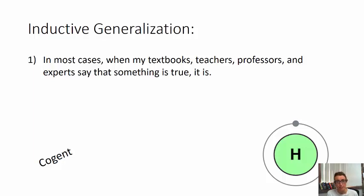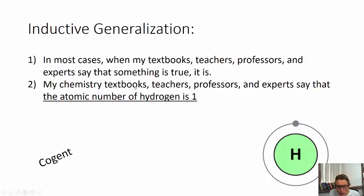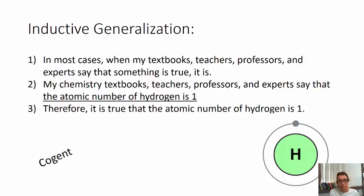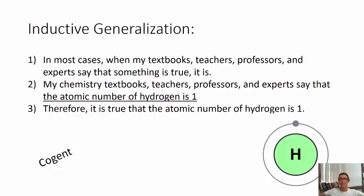You're in biology class, you read something in your textbook — it's probably true because it's in your textbook and your teachers assigned it. This is a generalization: experts know what they're talking about. So when chemistry textbooks, teachers, professors, and experts say that the atomic number of hydrogen is one, you should probably trust them. You don't have to go get an electron microscope and check it yourself. It could turn out there's some vast conspiracy about the periodic table, but that is so unlikely.